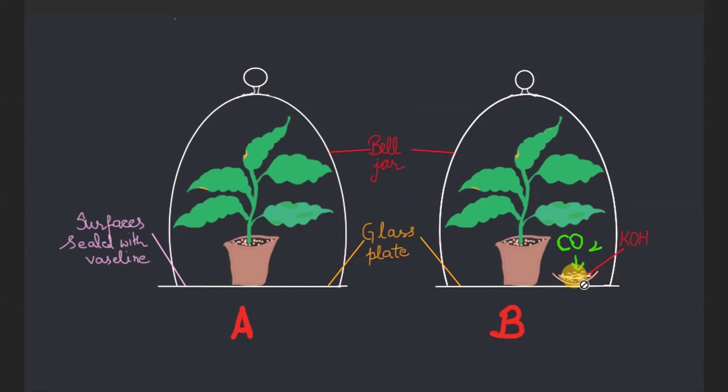What is the quality of potassium hydroxide? Potassium hydroxide absorbs the carbon dioxide in it. Now we will place two bell jars over the plants. After keeping the bell jars over these plants, we will seal the surfaces of the glass plate and the bell jar so that this apparatus turns airtight, so that no more gaseous exchange occurs between the plant and atmosphere.